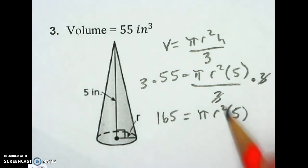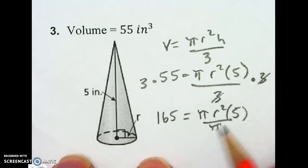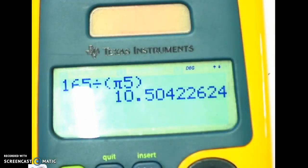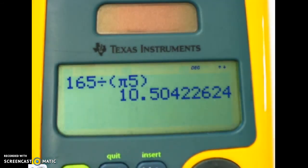We've got to get rid of the pi and the 5. So we'll divide by pi and 5. So I'll punch that in. Make sure you use parentheses on this.